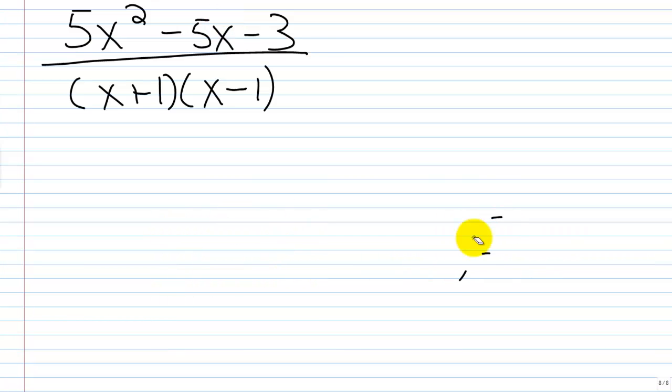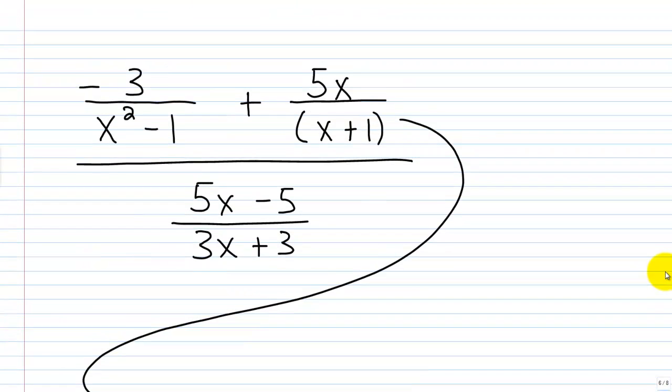So let's go back up to the top, and we're going to write this guy in there, 5x squared minus 5x minus 3 over x plus 1 times x minus 1. So we'll come back up here.